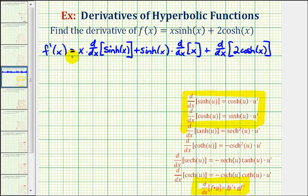Notice how because this derivative required the product rule, we didn't find any derivatives on this first step — we just set up the product rule. Now we'll go back and find the derivatives here, here, here, and here.